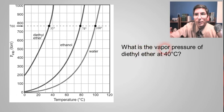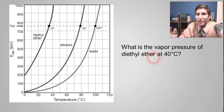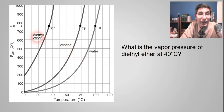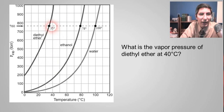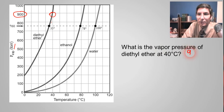First question: what is the vapor pressure of diethyl ether at 40 degrees Celsius? We go to the graph for diethyl ether, find 40 degrees Celsius, go straight up, and where does that meet the curve? It meets right at 900 torr, or 900 millimeters of mercury. So the vapor pressure is 900 torr — just read the graph.